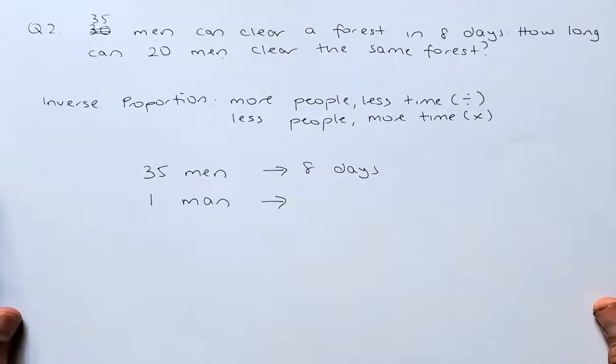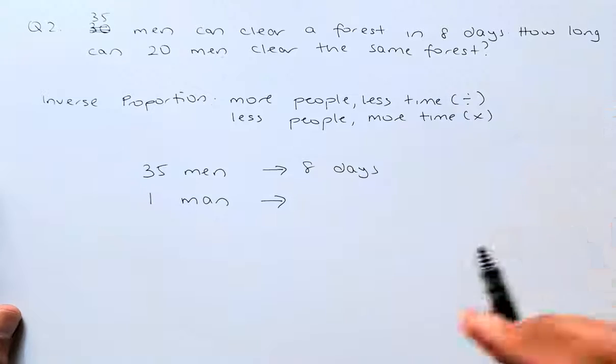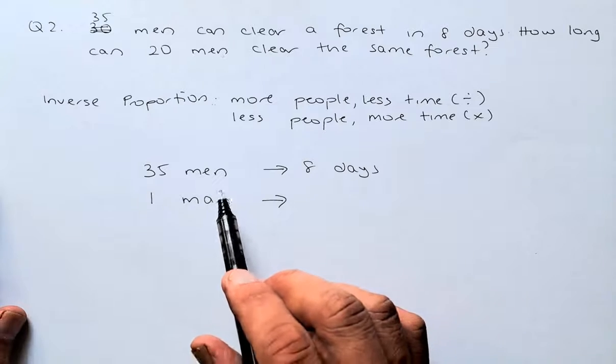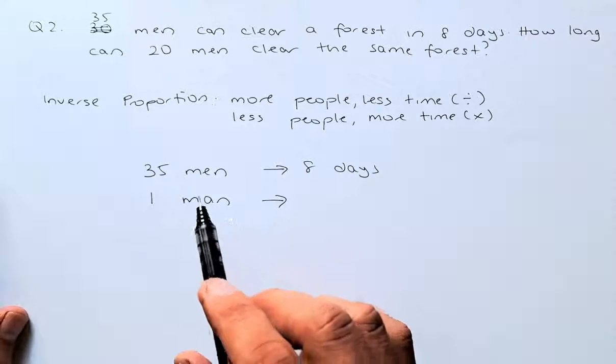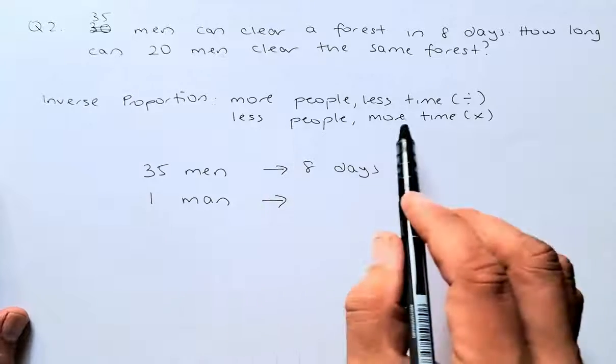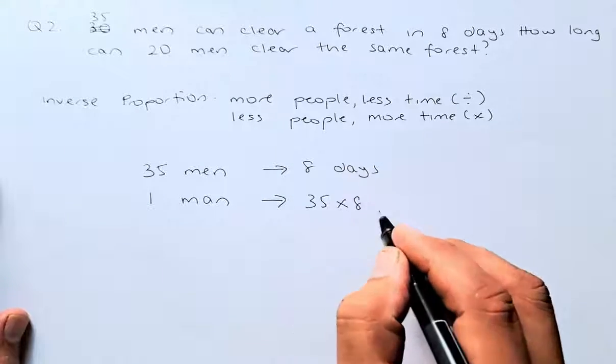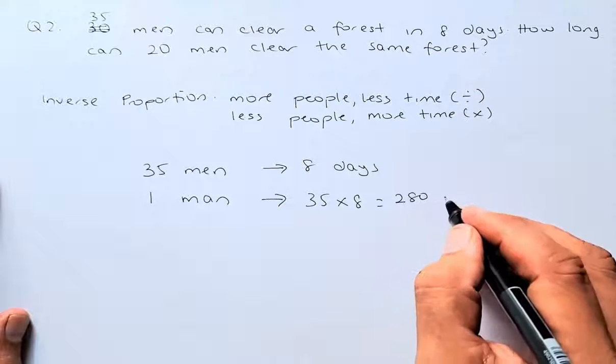So the same principle applies. More people, you take less time, so you divide. Less people, you take more time, you multiply. So we know that 35 men can clear the forest in 8 days. So 1 man, so because there are less number of men, so less people, we are going to multiply. So 35 multiplied by 8. So that will give us a total of 280 days.